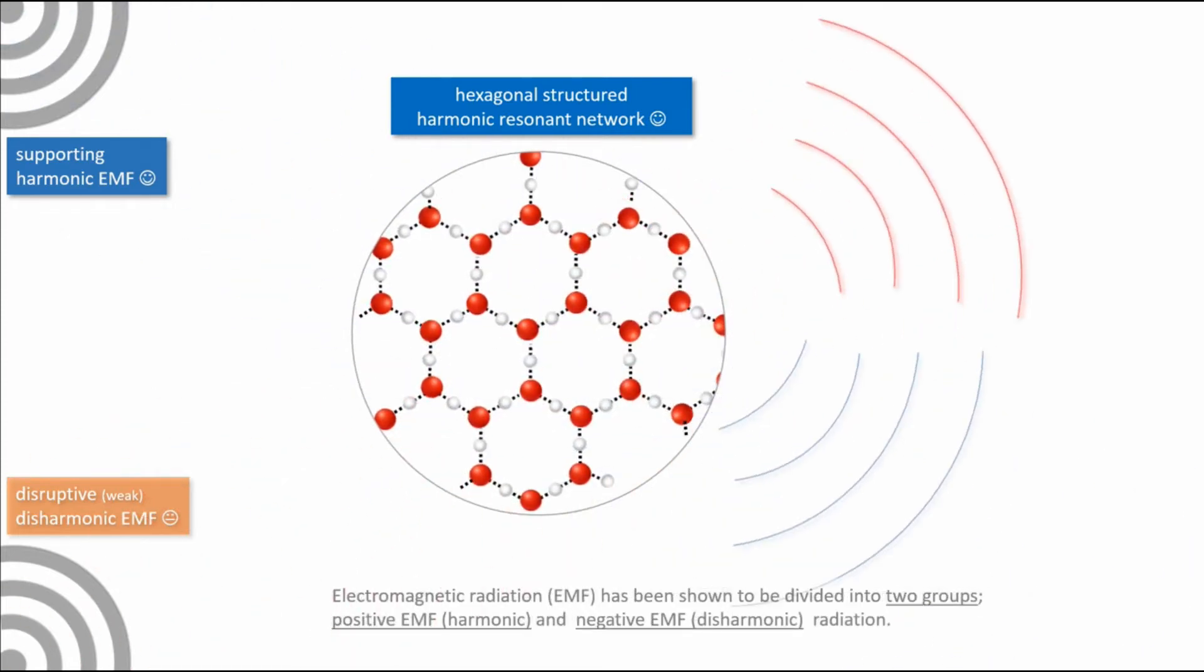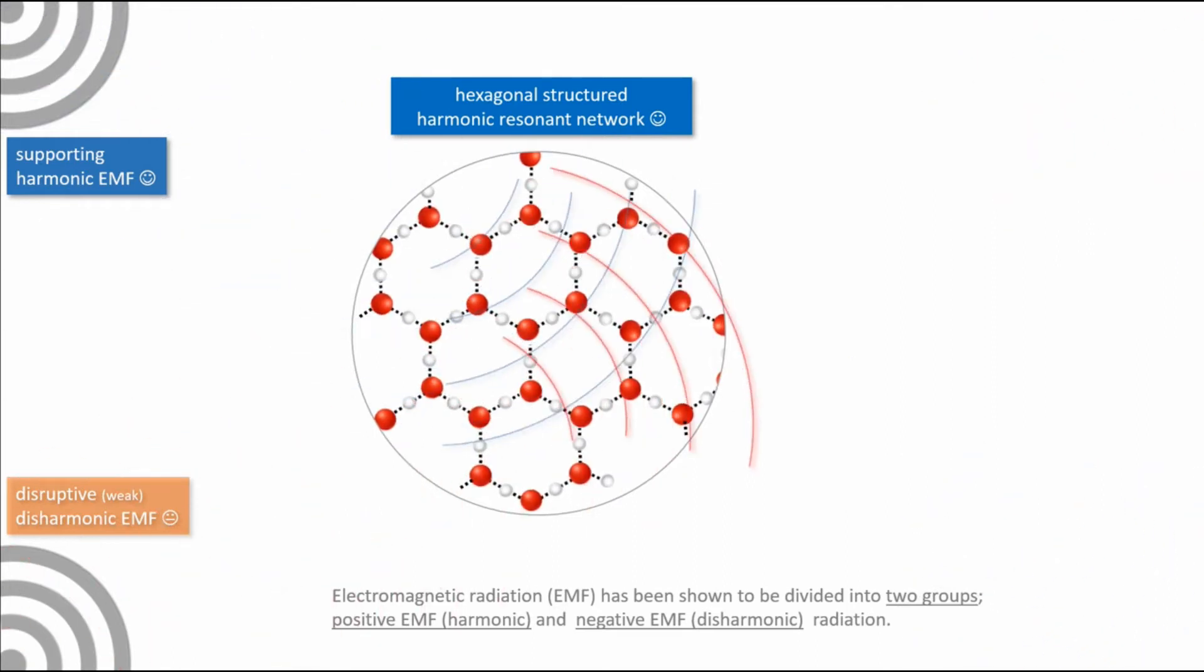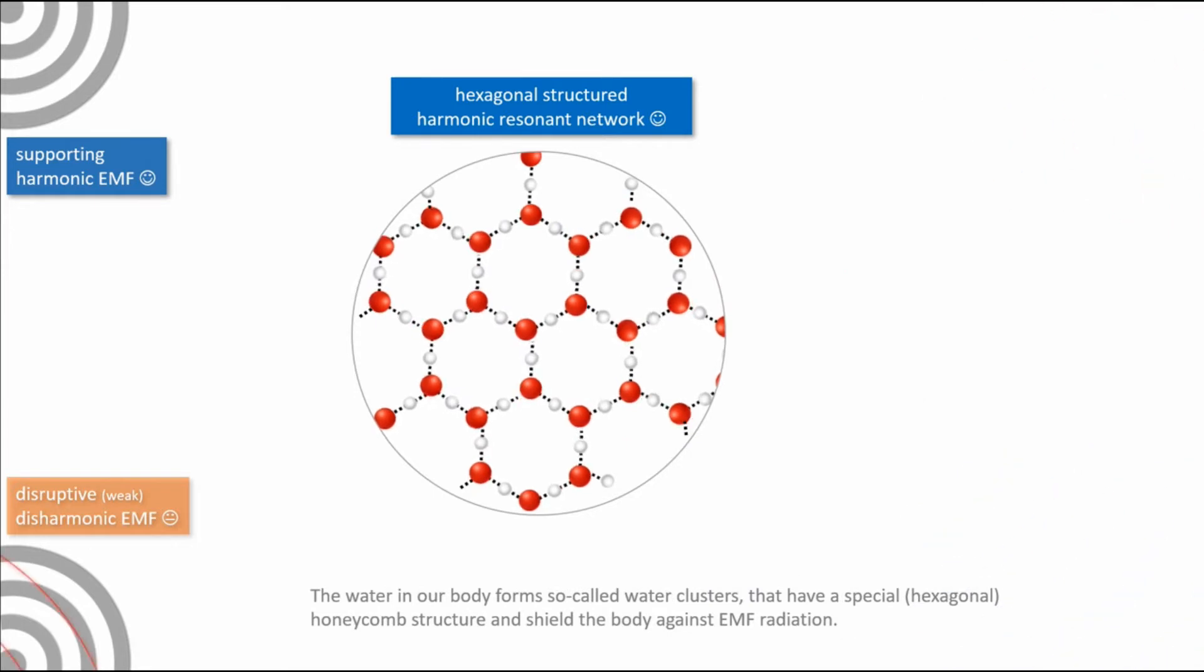Electromagnetic radiation has been shown to be divided into two groups: positive EMF and negative EMF. The water in our body forms so-called water clusters that have a special hexagonal honeycomb structure and shield the body against EMF radiation.